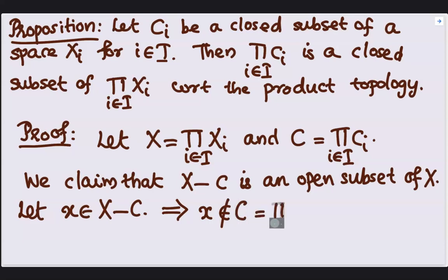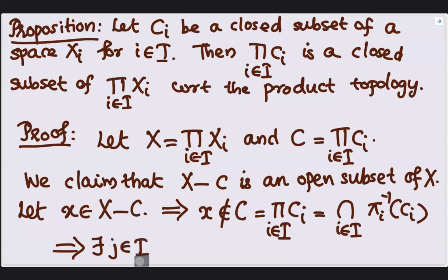C equals product C_I and it can also be expressed in the form intersection over i element of I, pi_i inverse of C_I. So x does not belong to the intersection will imply that there exists some index, say J, element of our index set I such that x does not belong to pi_J inverse of C_J.